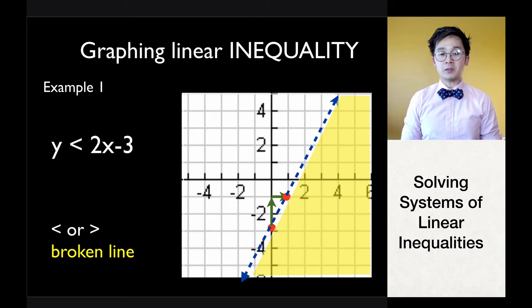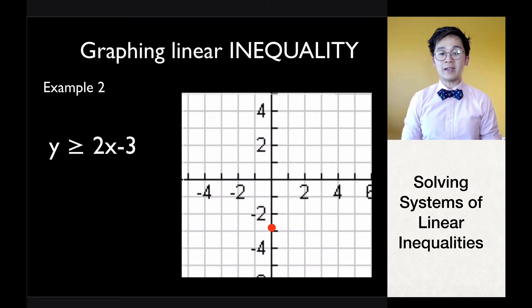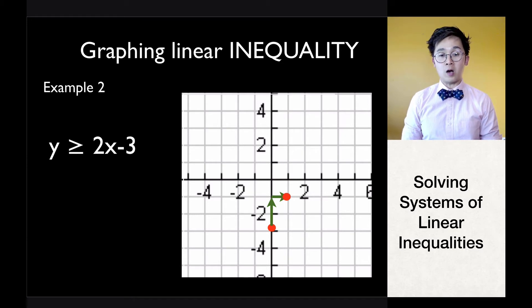Now for a second example: this inequality is similar but uses y greater than or equal to 2x minus 3. Just like the previous example, start at the y-intercept of negative 3 and move two units up and one unit to the right. Never move to the left — if you move left your graph will be wrong. Always move to the right when working with the slope, even if your slope is negative.